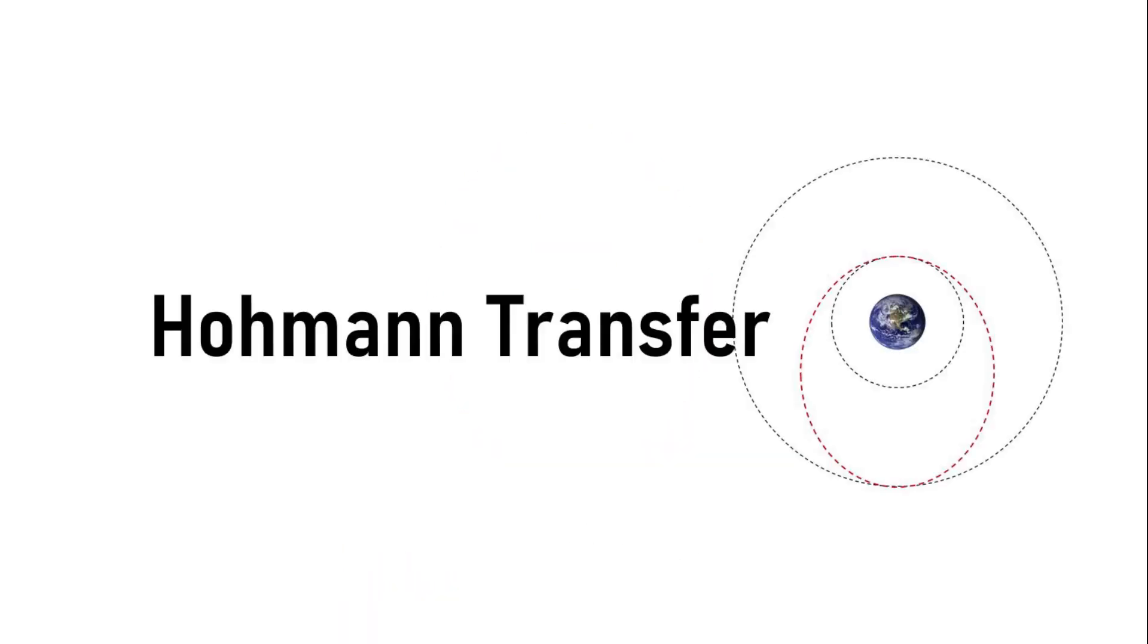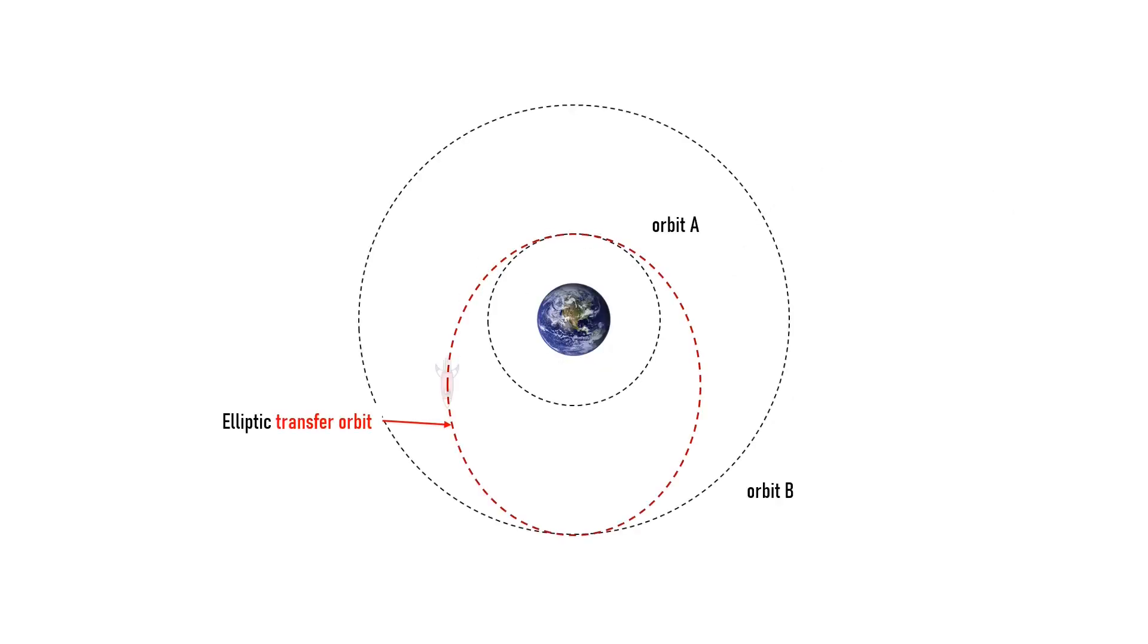A Hohmann transfer is preferred because it is the optimum two-impulse transfer path between two coplanar circular orbits. What if, for example, the intersection of the transfer orbit is not on the perigee or apogee but at some other points on the ellipse? We take a look at this general non-Hohmann transfer here.